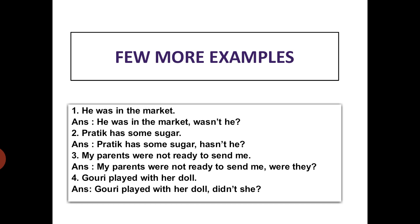A few examples are given on the screen. First example: 'He was in the market.' Write the sentence as it is and put a comma. The sentence is positive, so the question tag will be negative. The associative verb is 'was,' which becomes 'wasn't' in negative form, and the pronoun is 'he.' So the question tag is 'wasn't he?'